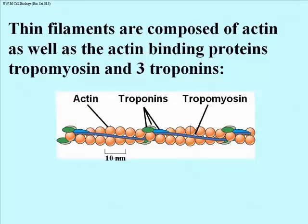Let's take a closer look at the actin filaments in muscle. Actin is actually associated with many different kinds of proteins that enable it to function appropriately. There are the actins — this twin helix of polymerized globular actin proteins — and lying along the length about every 7 or 8 actins in this double helix are molecules of tropomyosin, shown in darker blue. Attached to each of those at about every 7th or 8th actin are a series of small proteins called troponins.